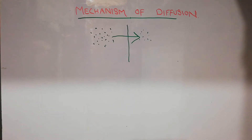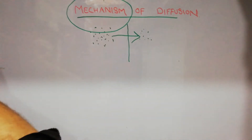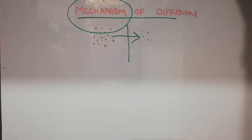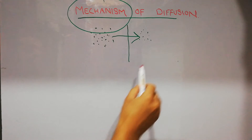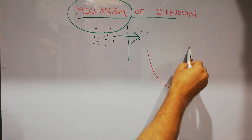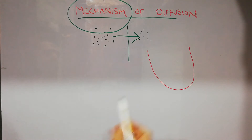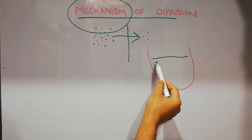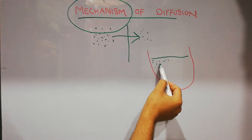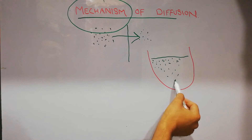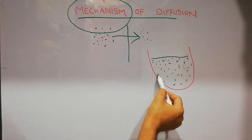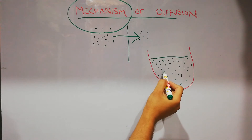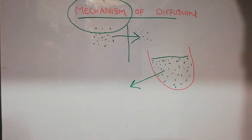So how does this movement basically occur? What is the basic mechanism of diffusion? Let's say we have a container which contains some fluid or water. The water is basically made of small molecules, and all these molecules are in motion — they are moving randomly.